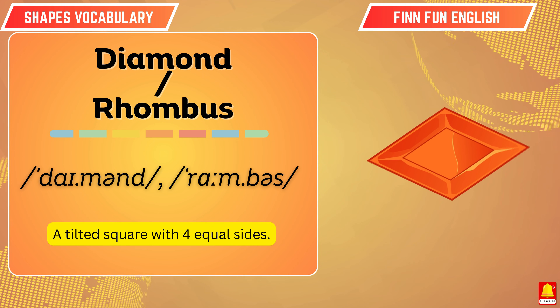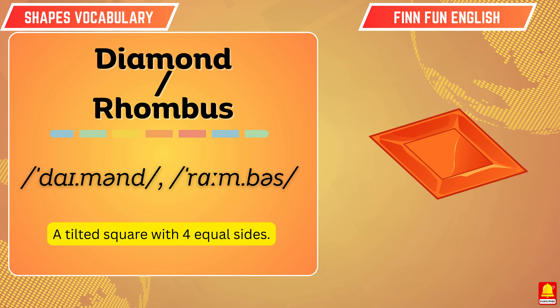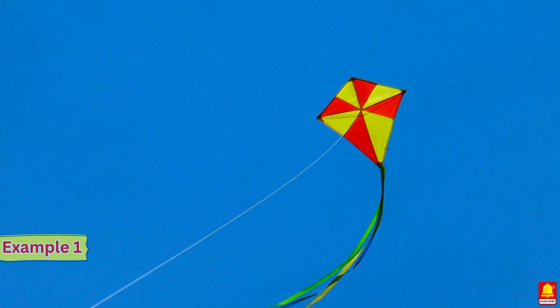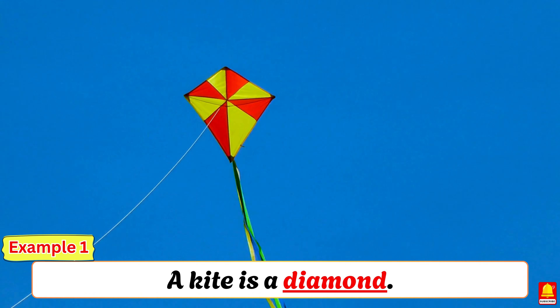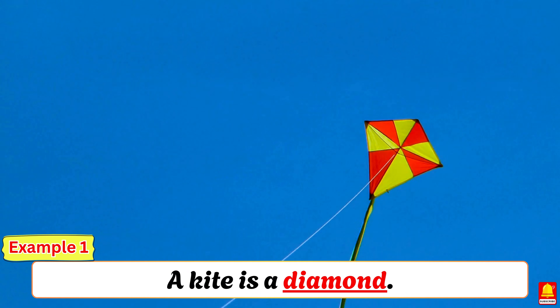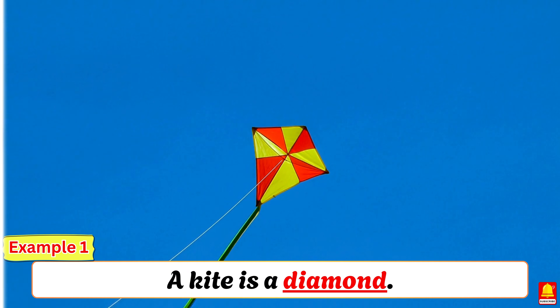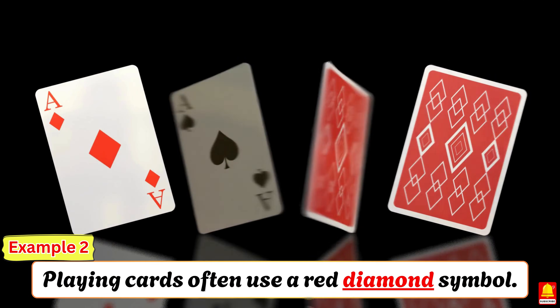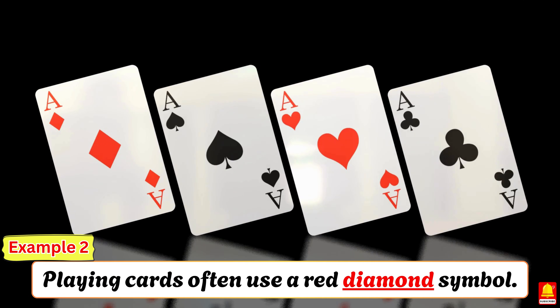Diamond, rhombus. A kite is a diamond. Playing cards often use a red diamond symbol.